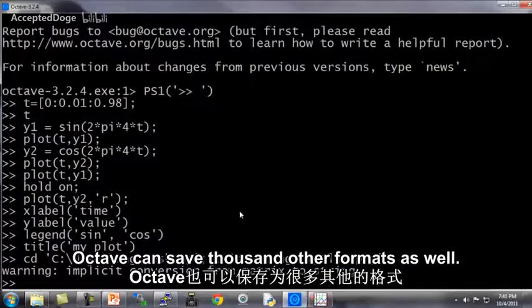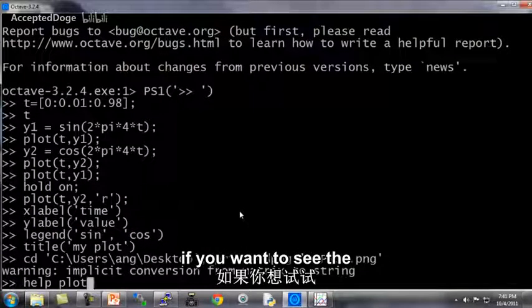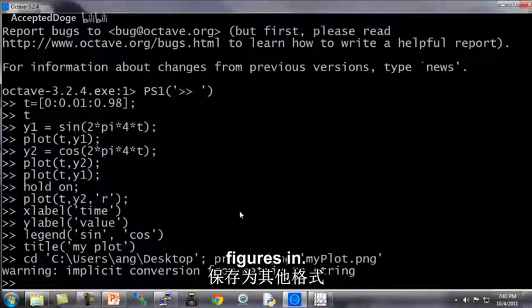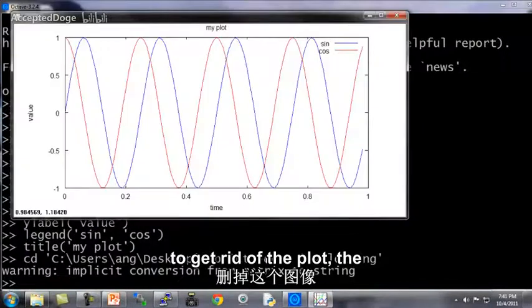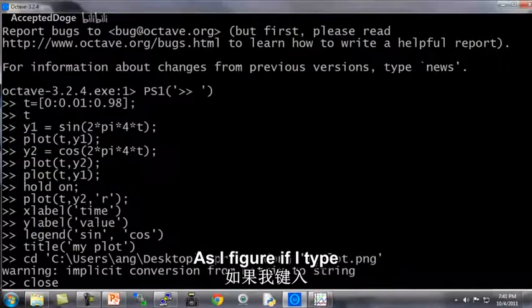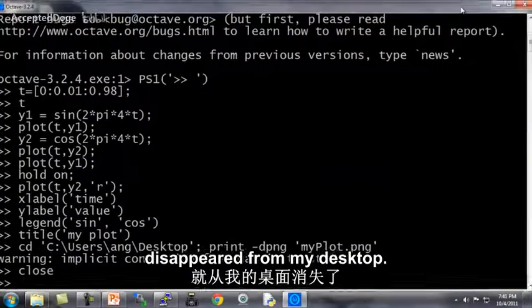Octave can save files in other formats as well. So you can type help plot if you want to see the other file formats rather than png that we can save figures in. And lastly, if you want to get rid of a plot, the close command causes a figure to go away. So that's that figure. If I type close, that figure just disappeared from my desktop.